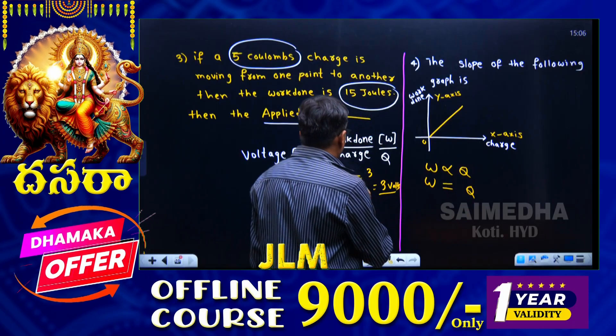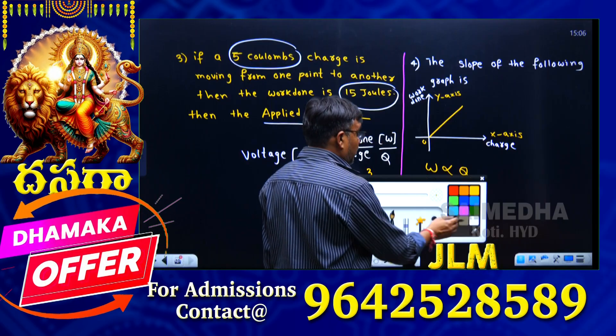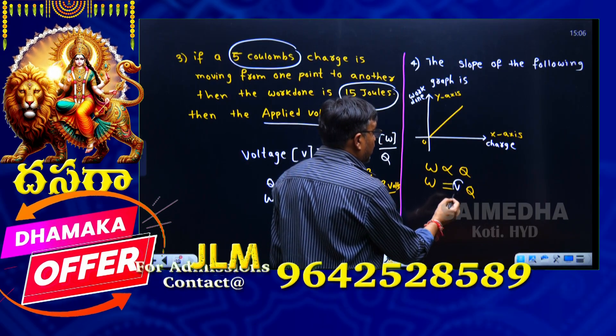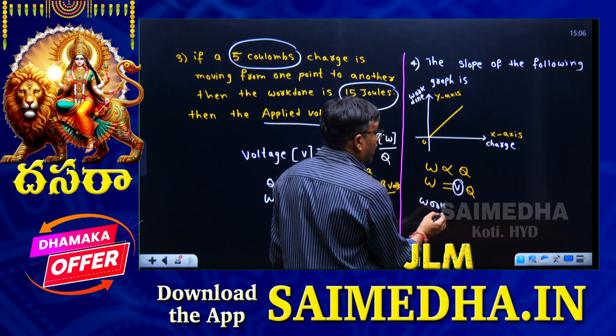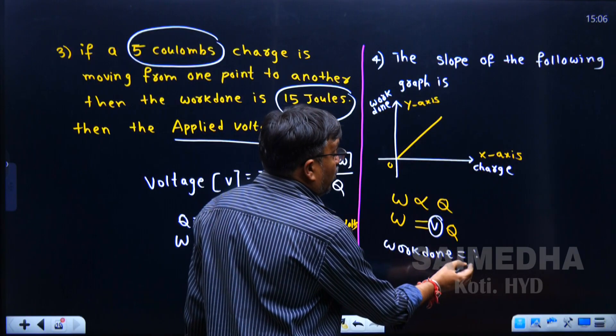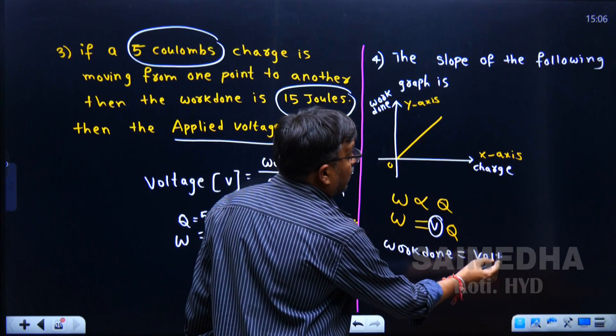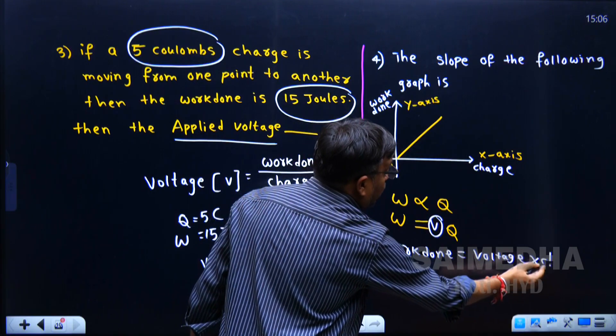From V equals W by Q, we get W equals voltage into charge. What is the slope?